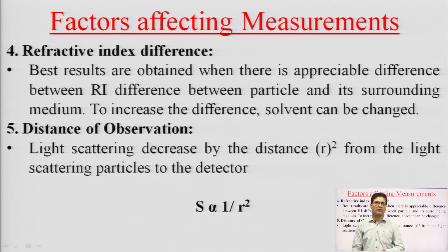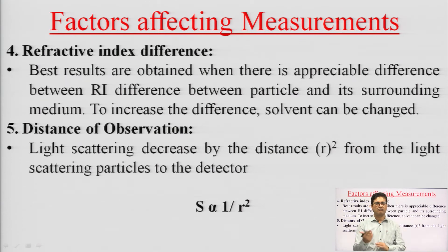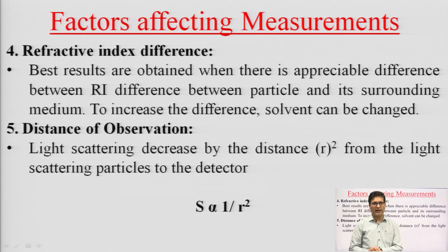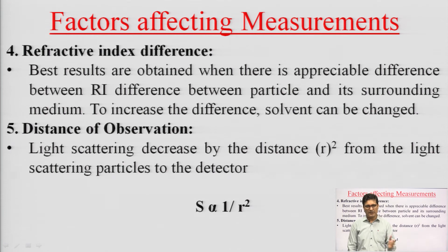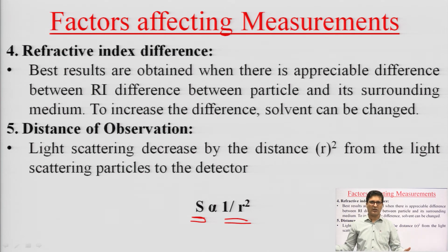The fourth factor is refractive index differences. When the gap in refractive index between two different media is larger, there should be an appreciable difference between both media to get better results. Best results are obtained when there is an appreciable difference between the refractive index of the particle and its medium — this can be altered by changing the solvent. The final factor is distance of observation: light scattering decreases with the distance from the scattering particle to the detector. Scattering is inversely proportional to the square of the distance — the greater the distance of observation, the less the scattering detected.